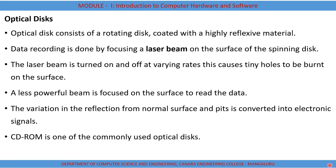An optical storage device consists of a flat round portable disk, around 0.75 inches in diameter and less than 1/20th of an inch thick, coated with a highly reflective material. The optical disk stores information in the form of pits and lands. Pits are tiny reflective bumps created with a laser beam, and lands are flat areas separating the pits. A land reflects the laser and is read as binary digit 1, while a pit absorbs the light and is read as binary digit 0.